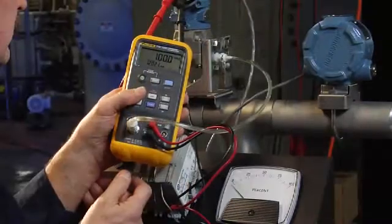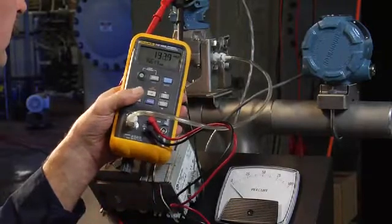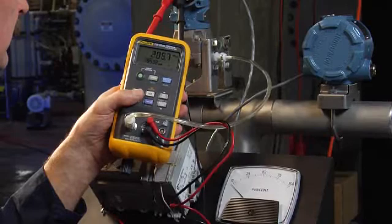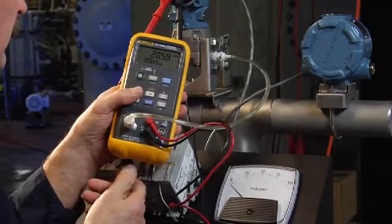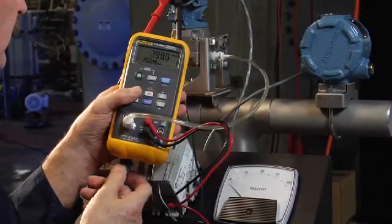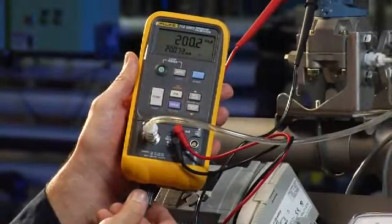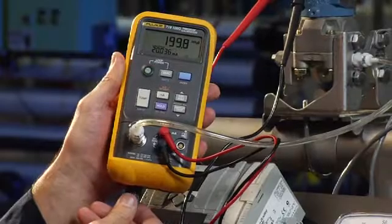The last step is to test the full scale pressure value of the transmitter, 200 inches of water. Use the electric pump to generate 200 inches of pressure. Use the fine adjust in the pump to dial in the value to exactly 200 inches and verify for 20 milliamps. With 200 inches of water applied, the deviation between measured milliamp value and 20 milliamps is the calibration error of the transmitter.